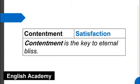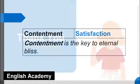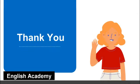Contentment means satisfaction. Example sentence: Contentment is the key to eternal bliss. If you like this video then please like and share with your friends. For more such videos, subscribe to English Academy. Thank you.